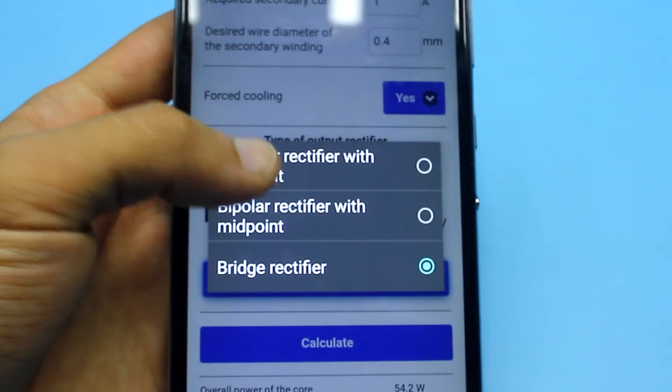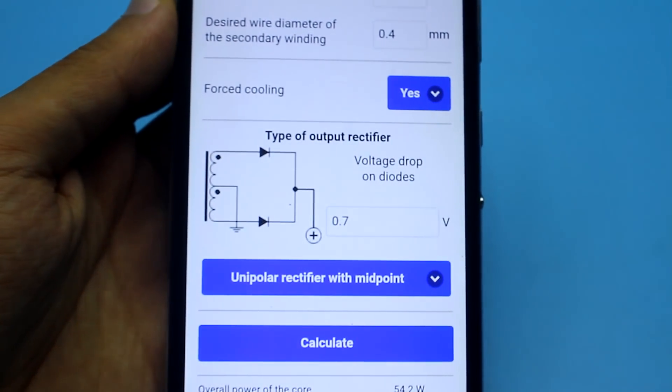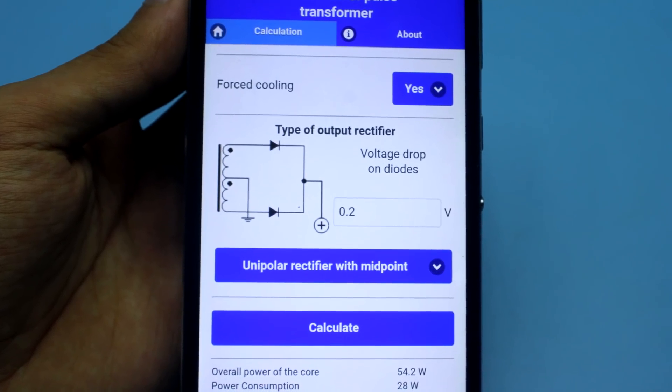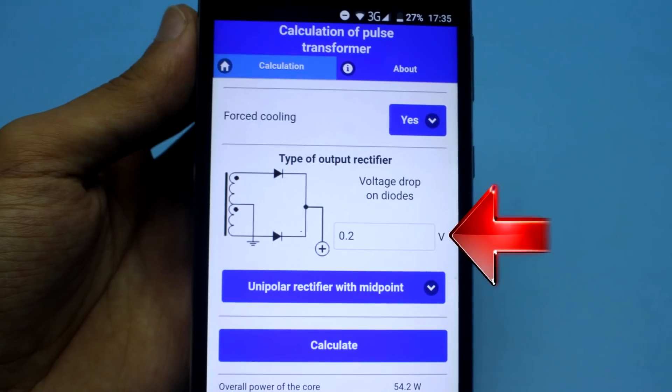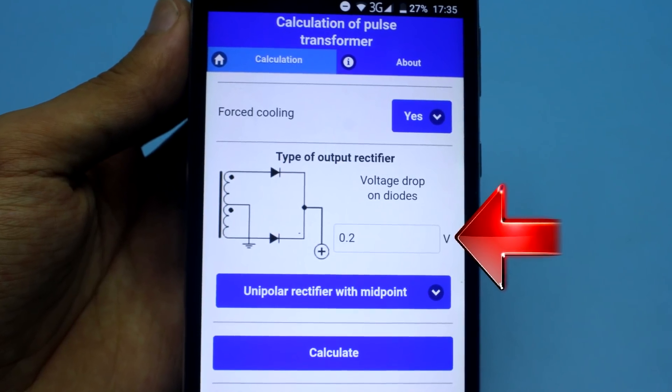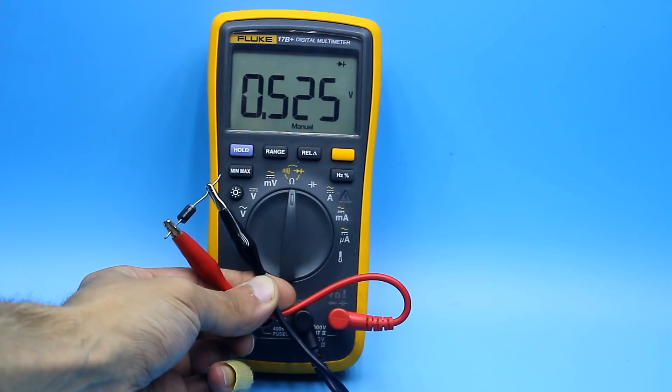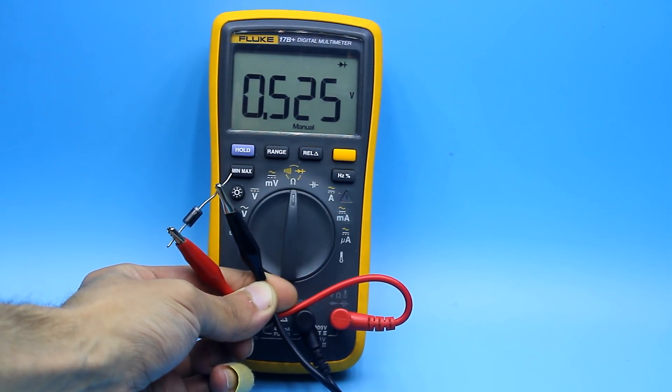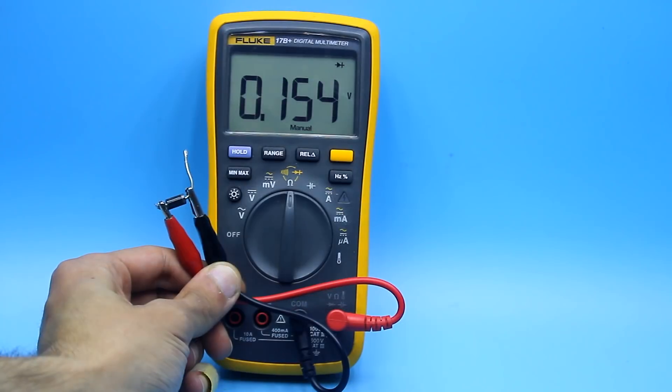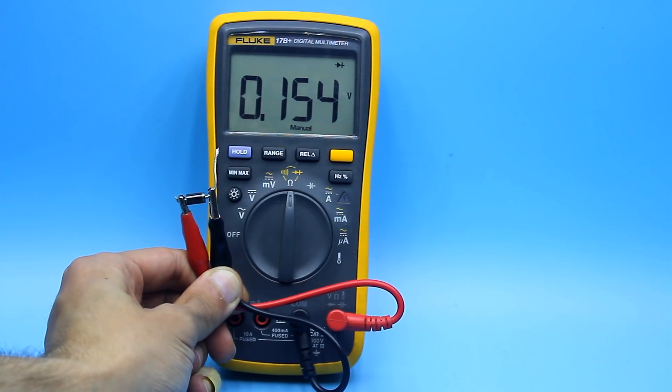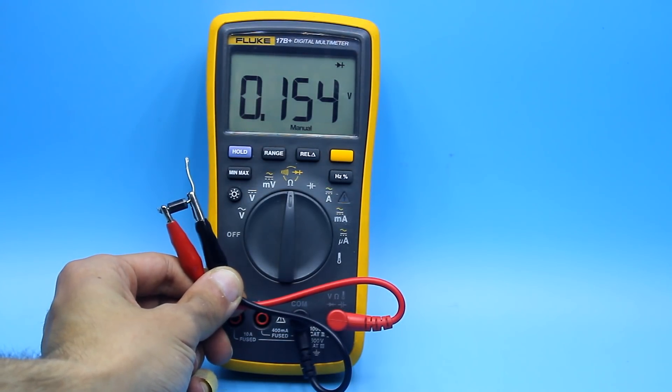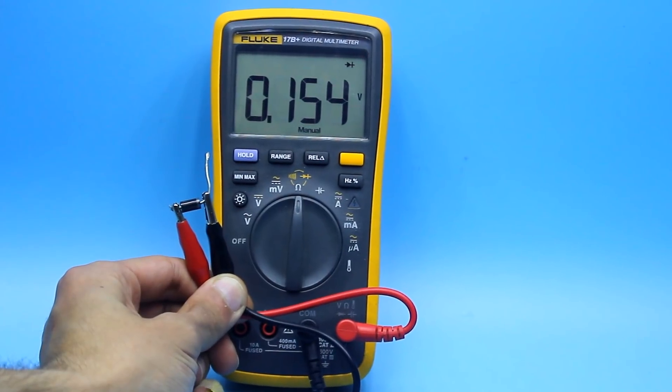And at the end, we choose the rectifier type and the voltage drop on the diodes. In our case, rectifier is unipolar with an average point. In the case of conventional diodes, voltage drop is usually 0.6 to 0.7 volts. In the case of Schottky diodes, 0.15 to 0.3 volts. It's easy to check with a multimeter.